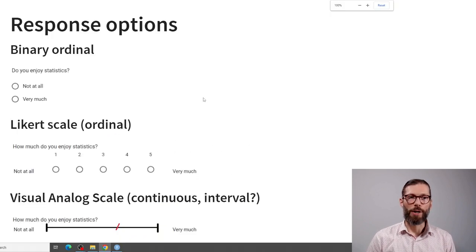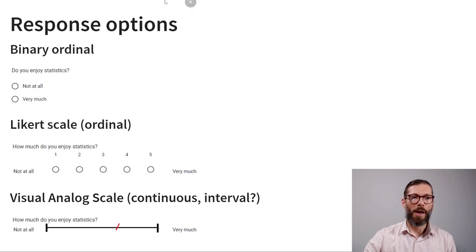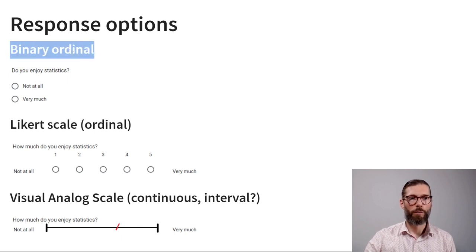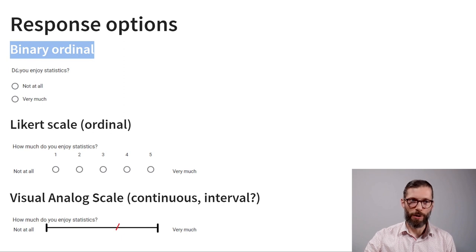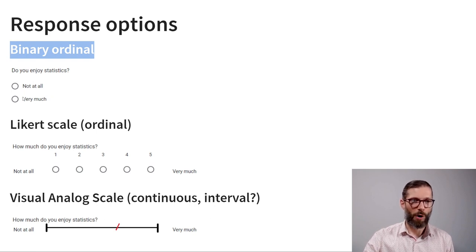When administering questionnaires, we have to think about what response options we will allow. One example is a binary ordinal response option. Here the question is: do you enjoy statistics? And participants can either respond 'not at all' or 'very much.' This is a binary response option.